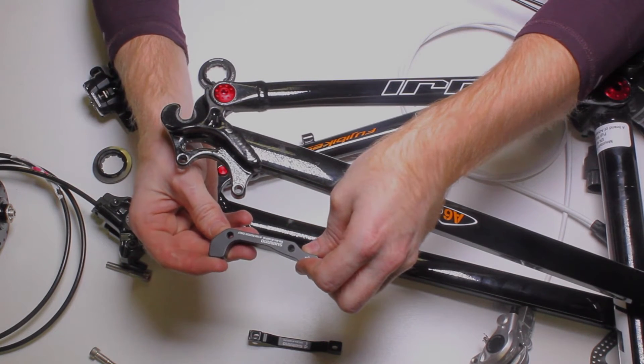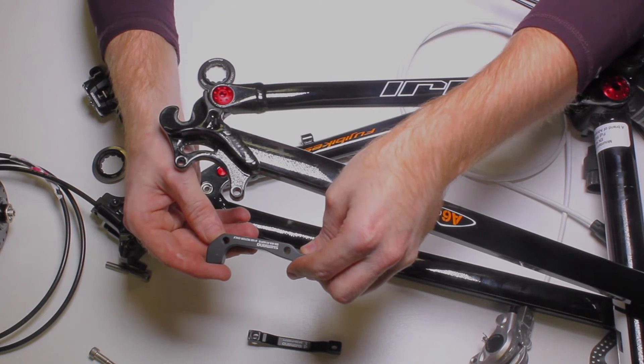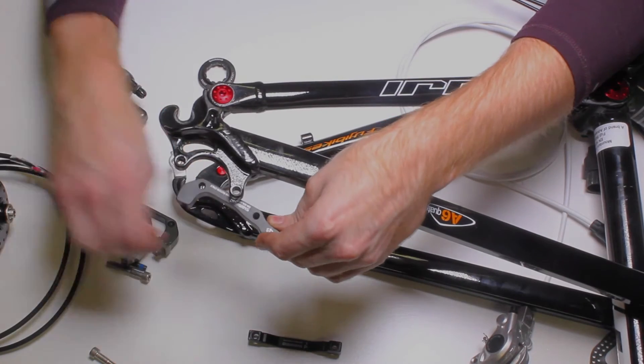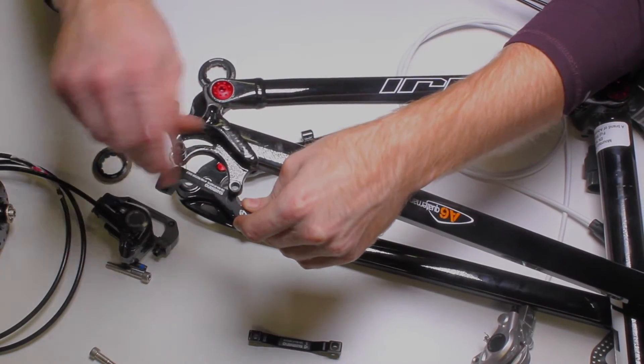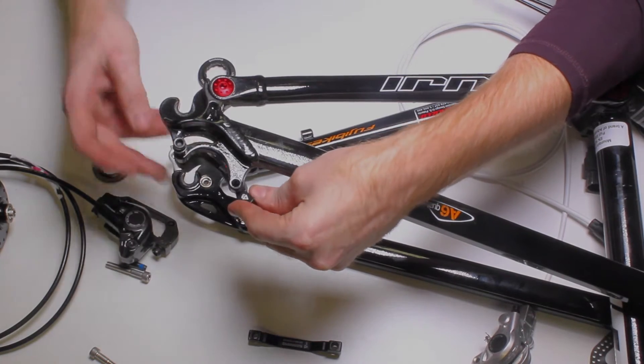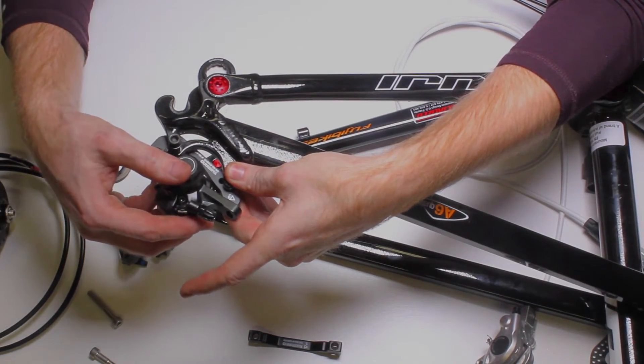This happens to be a 160 millimeter rear. And if I were to put this on the front, it would become 180 millimeter. So what I would do is I would screw this into my frame. And now, voila, I have a post mount, just like that.